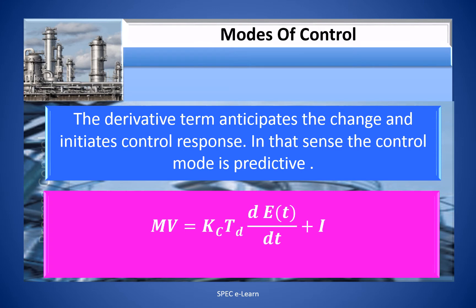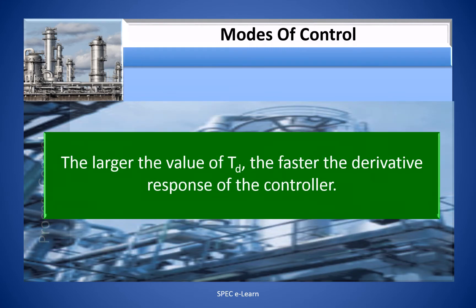The MV or output of a derivative control mode is expressed as: MV = Kc × Td × (dE/dt) + i, where Td is the derivative or rate time. The larger the value of Td, the faster the derivative response of the controller.